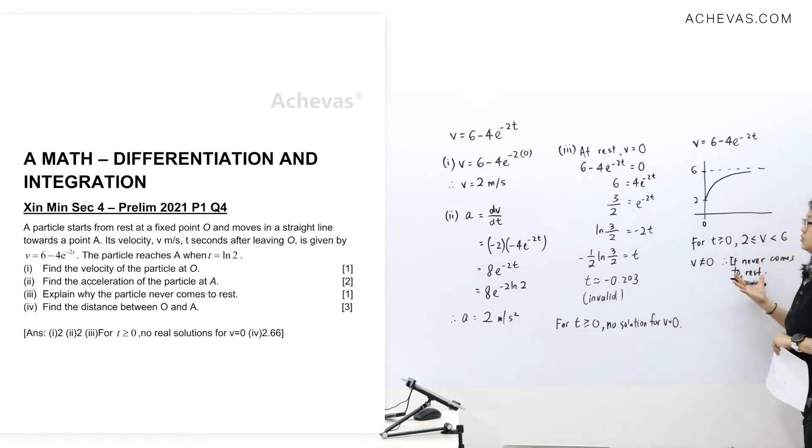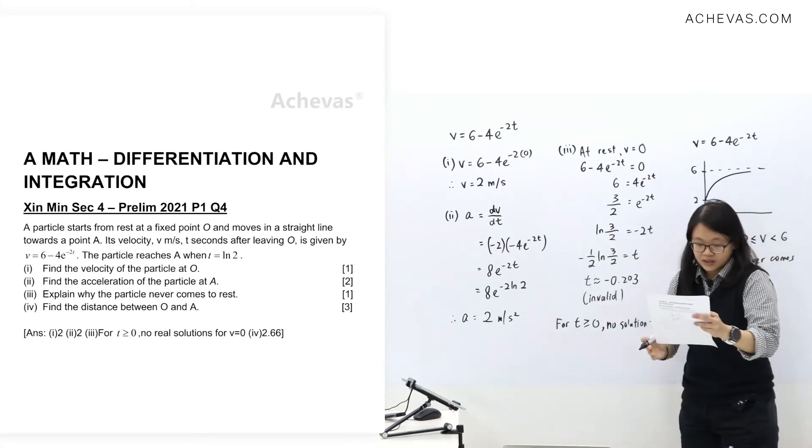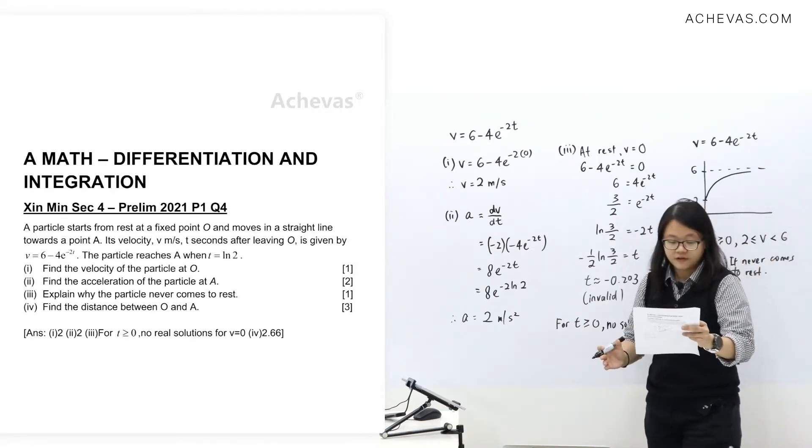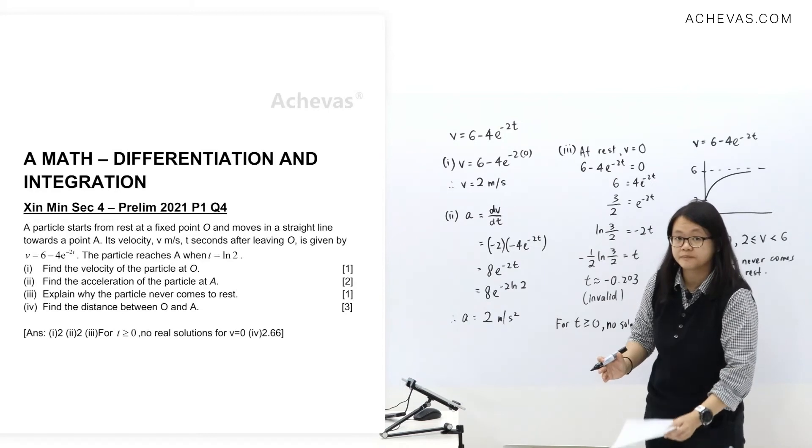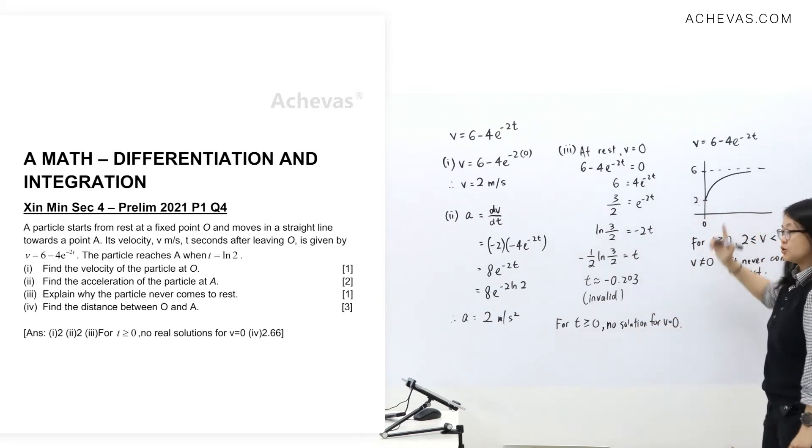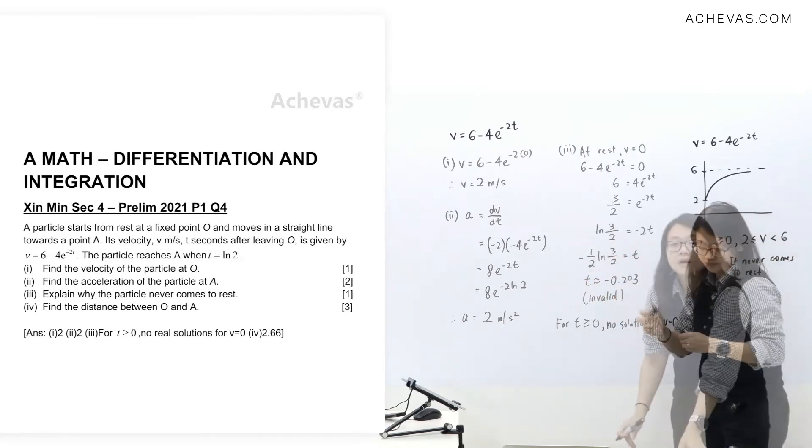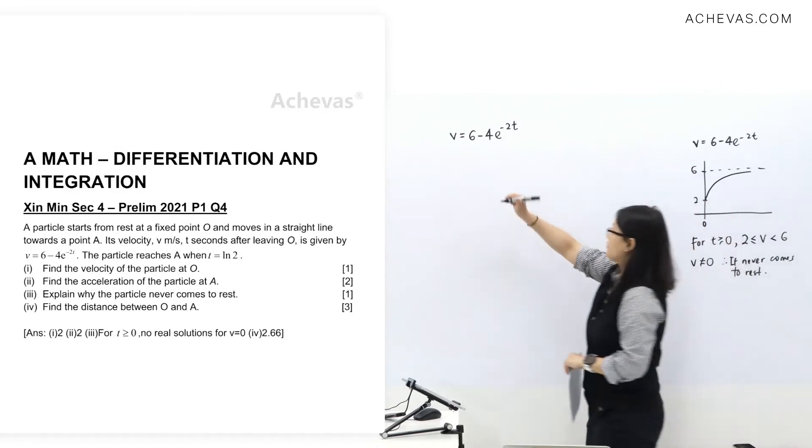So to let you take a look at actually what it looks like to see the velocity of that particle. Now, question 4, find the distance between O and A. So now we know that it never come to rest. It will be easy question to do the next part. I need some space, so I'm going to clear over there.